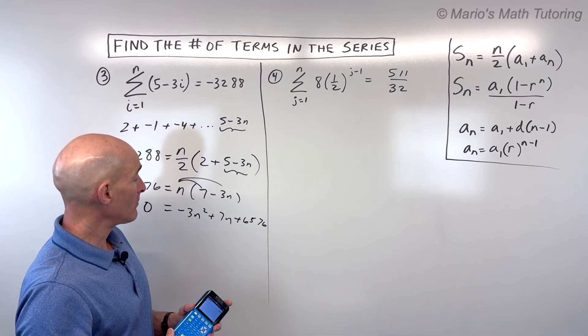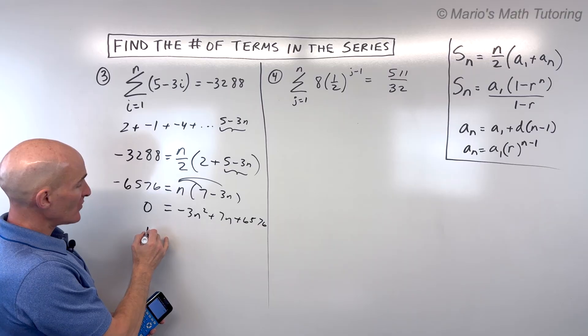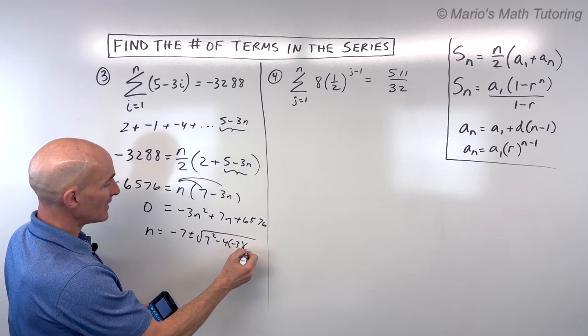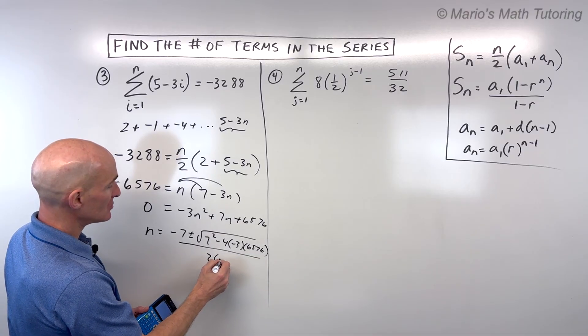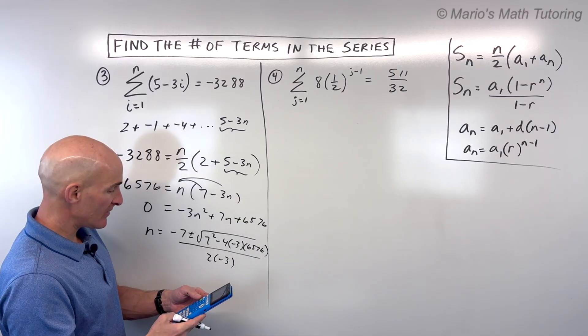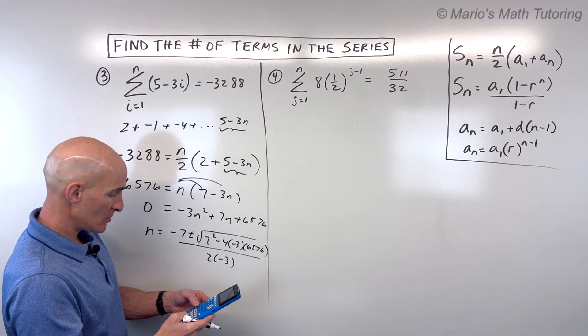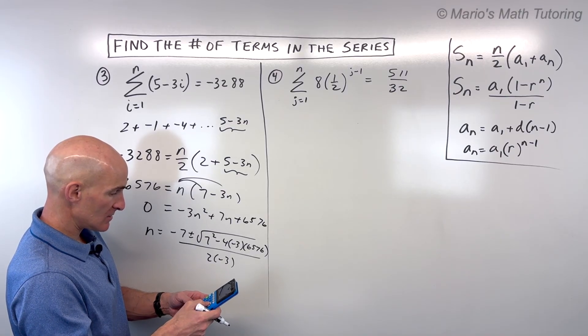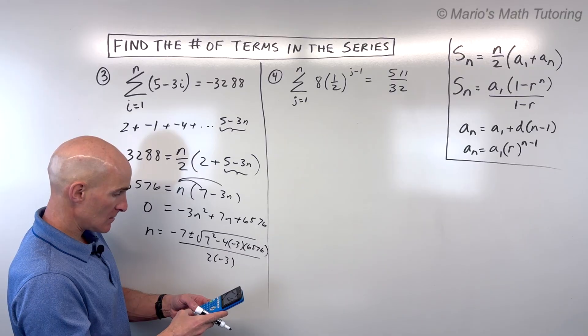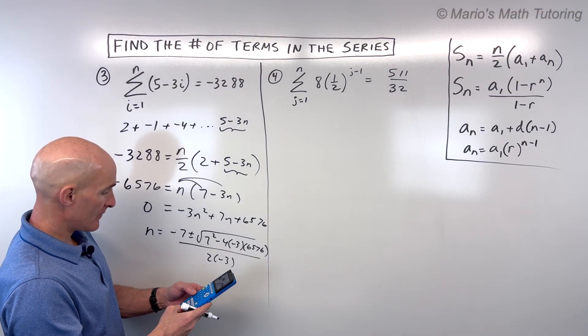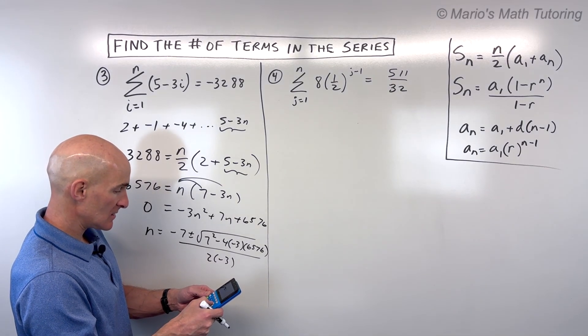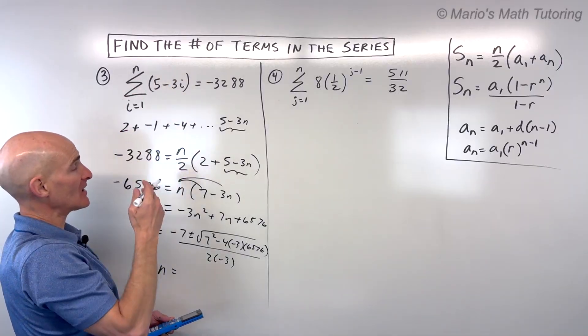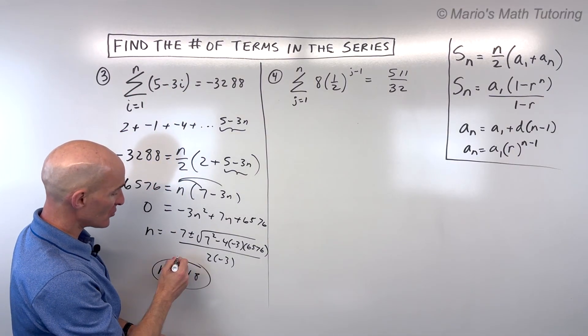Now, you could try to factor this, or I'm just going to use a quadratic formula again, since these numbers are quite large. So we have n equals negative b plus or minus the square root of b squared minus 4 times a times c, all divided by 2 times a. Going to the calculator now, let's see what we get. Negative 7 plus the square root of 7 squared minus 4 times a times c. All divided by, now if I do the minus, it comes out to 48. One of the terms came out negative, which doesn't make sense. You can't have a negative number of terms. So this comes out to n equals 48. So 48 terms in our series here.